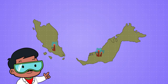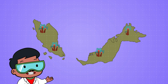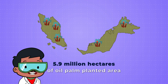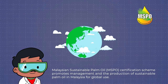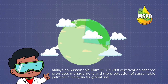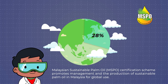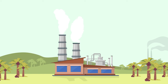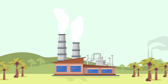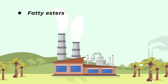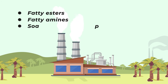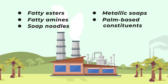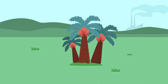For your information, in 2020, Malaysia had 5.9 million hectares of oil palm planted area, yielding 28% of global palm oil production. The Malaysian palm oil industry has diversified into producing oleochemical derivatives such as fatty esters, fatty amines, soap noodles, metallic soaps and palm-based constituents.